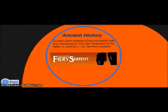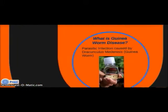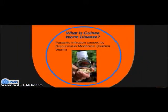Guinea worm disease, or dracunculiasis, has ancient roots — it was first mentioned in the Old Testament of the Bible in 1450 BC as 'the fiery serpent.' Guinea worm disease is a parasitic infection caused by the Dracunculus medinensis, commonly known as the guinea worm.